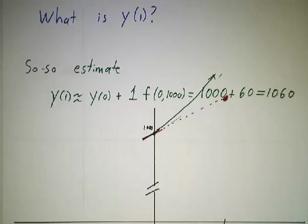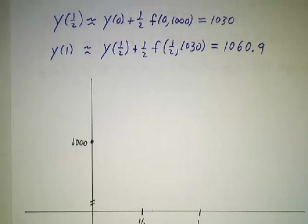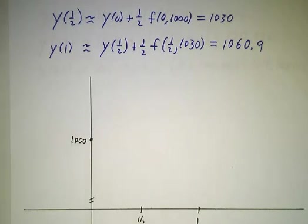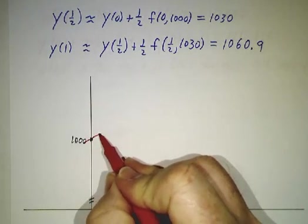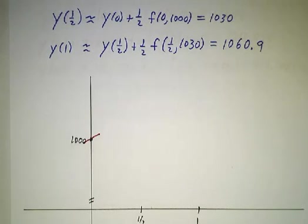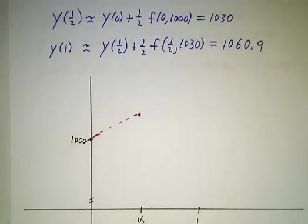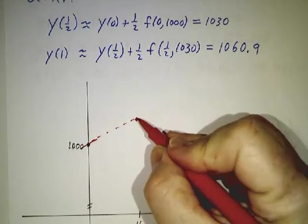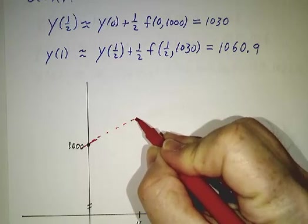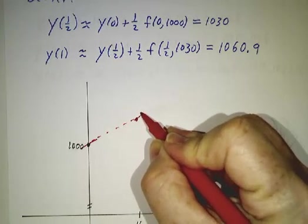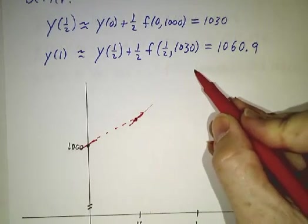Now a better estimate was to do it in two steps to compound our interest twice a year. And what that meant is that we had our slope of 60 and we followed in a straight line to 1/2 and then we re-evaluated. Then we said, the slope here isn't 60, it's actually 61.8. So now we better take a slight turn and go a different direction. We followed that different direction up until we're at 1.